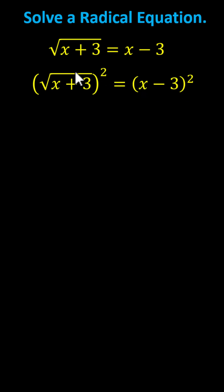On the left, squaring undoes the square root. We're left with x plus 3 on the left. And now we need to square x minus 3.